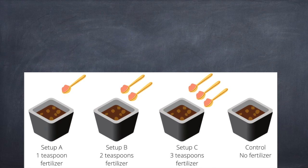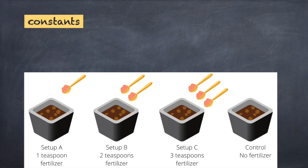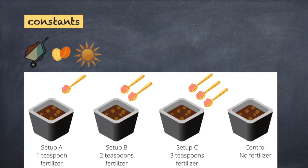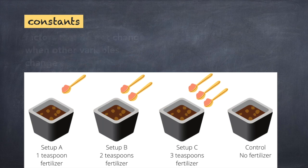To be sure that we are testing to see how the amount of fertilizer affects seed growth, we must keep other factors the same. A factor that does not change when other variables change is called a constant. You might set up one trial involving four seeds using the same soil and seed type. Each seed is given the same amount of sunlight and water and is kept at the same temperature. These are all constants.